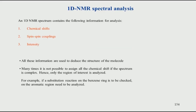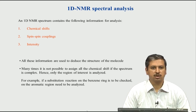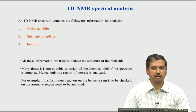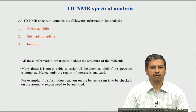Let us start from 1D proton NMR. In a typical 1D spectrum, there are three parameters you will mainly see. One is called the chemical shift — that is the peak positions. You will also see what is called spin-spin coupling, also known as J coupling, which causes a splitting of the peak. Small multiplets are seen, and this carries a lot of information about the structure of the molecule. It is therefore very important to analyze the data with respect to spin couplings.